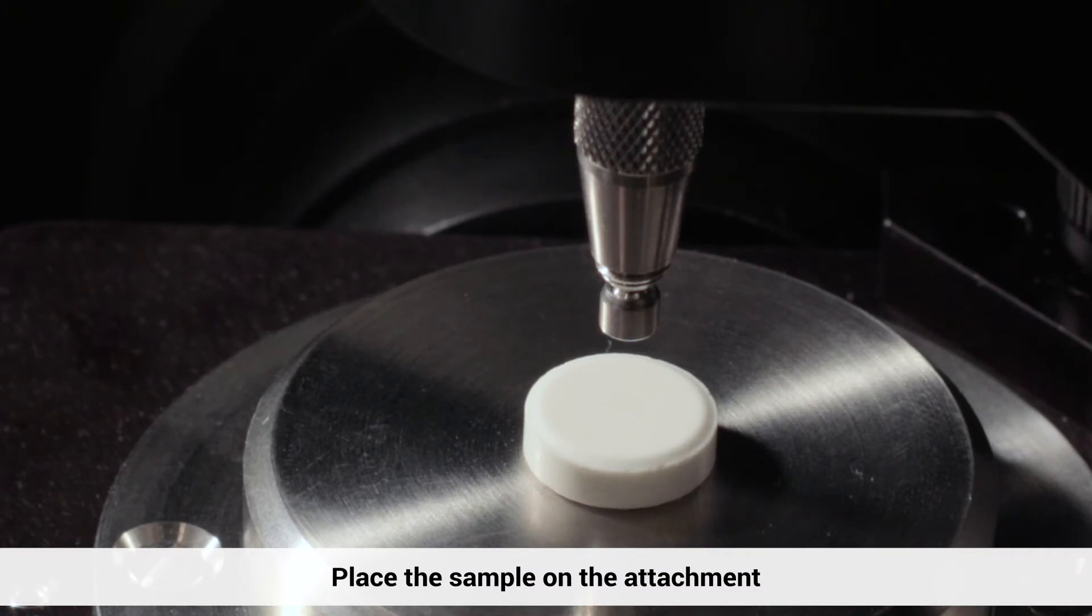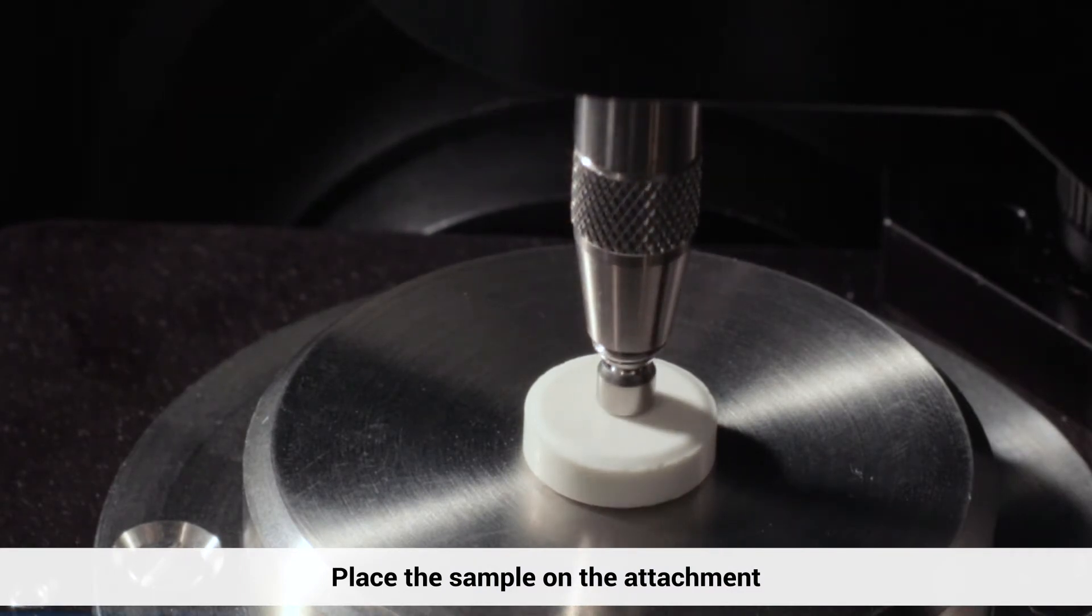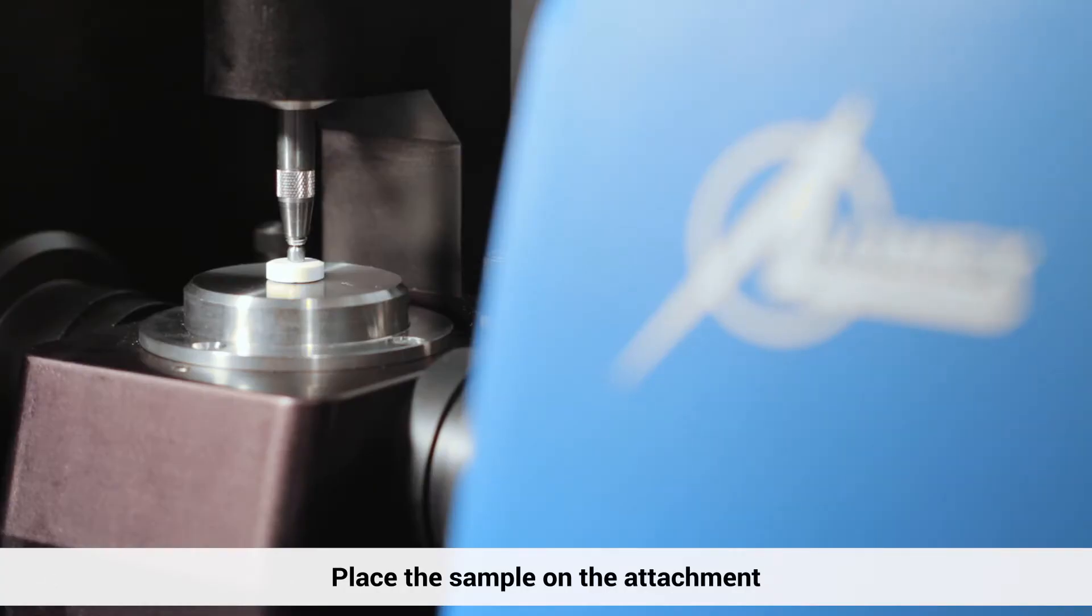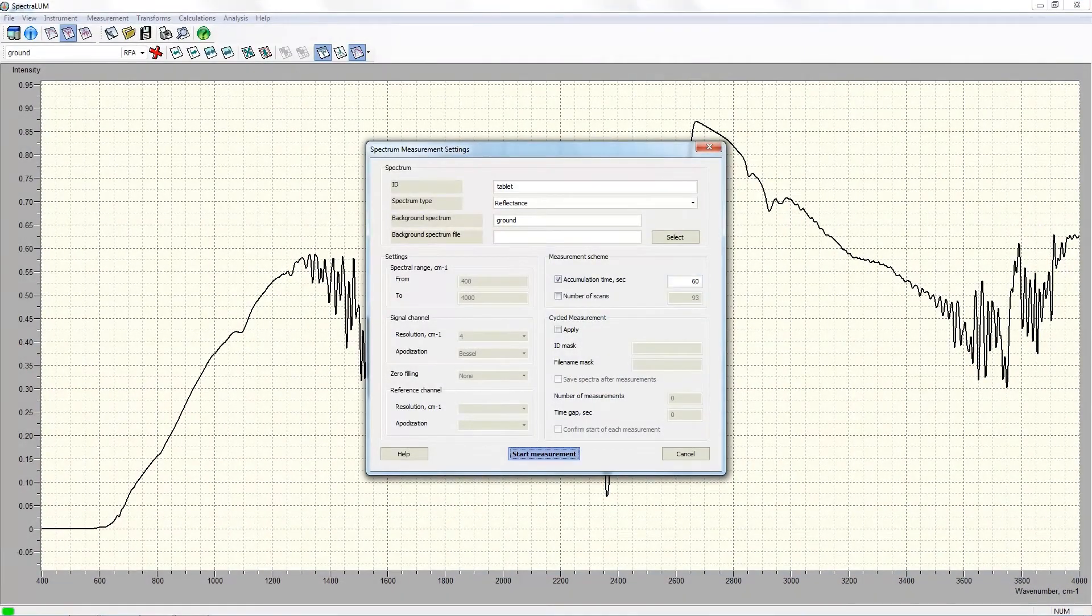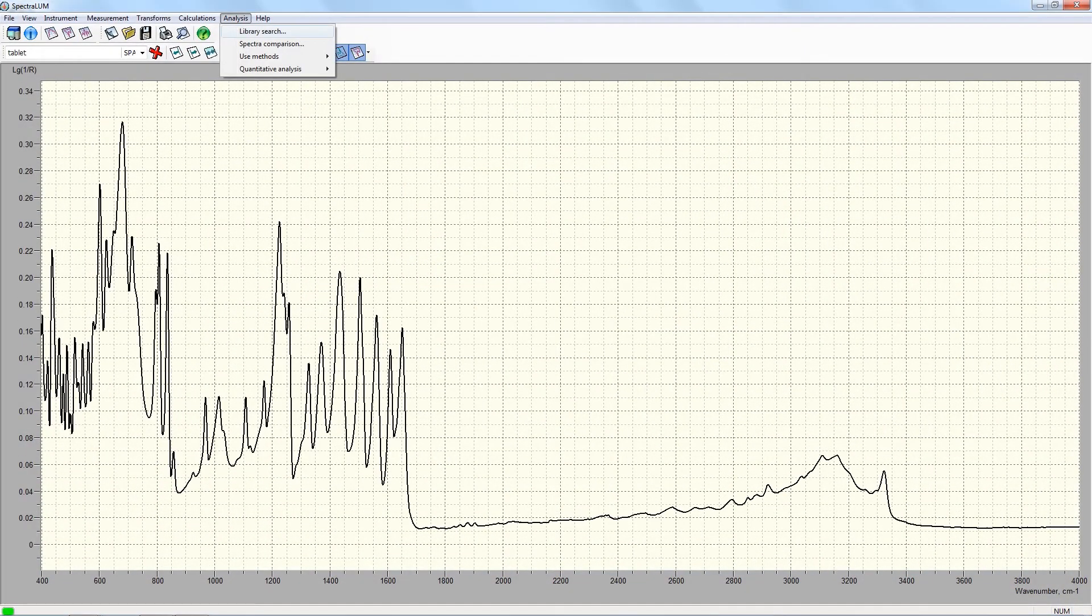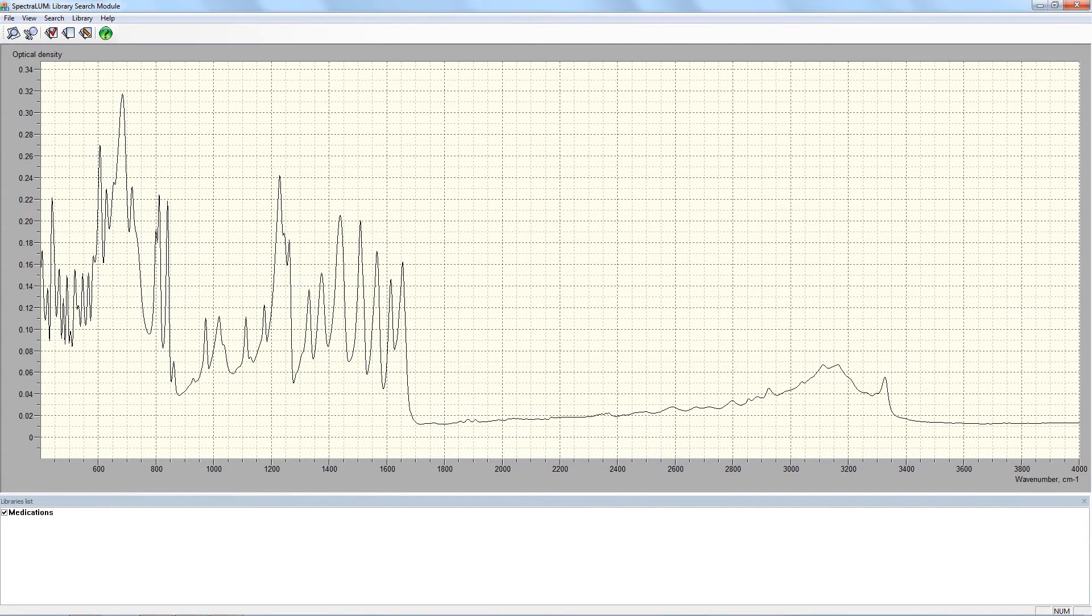Let me show you how simple it is to identify a sample with pre-existing spectra library. We will use an unknown drug as an example. Let's place the sample on the attachment and press start. We launch the measurement.